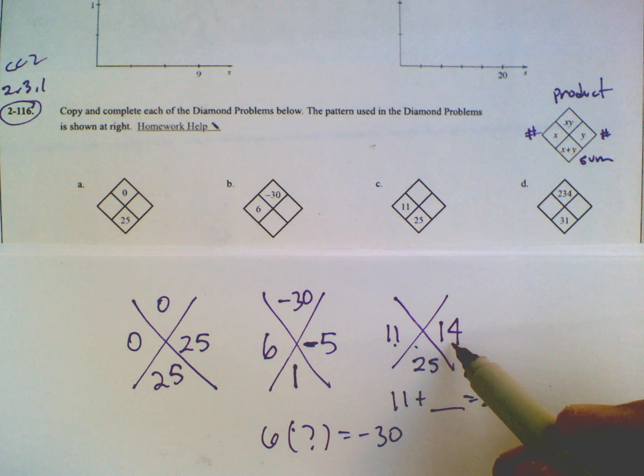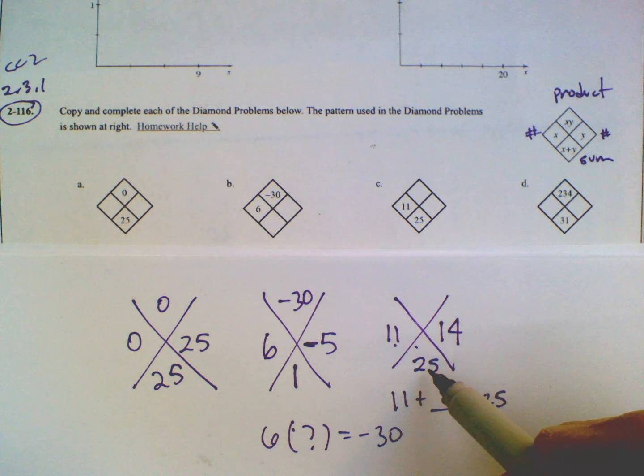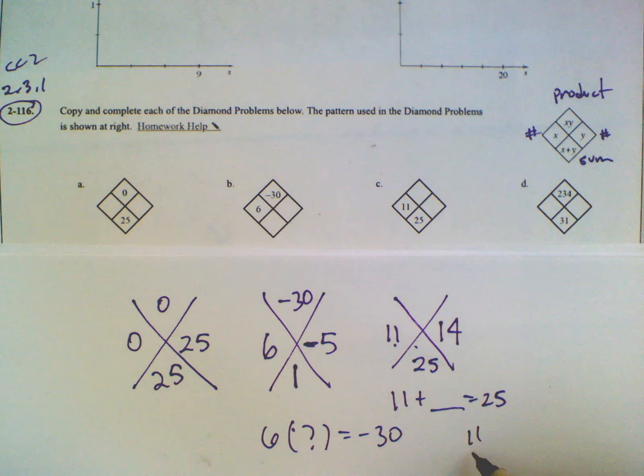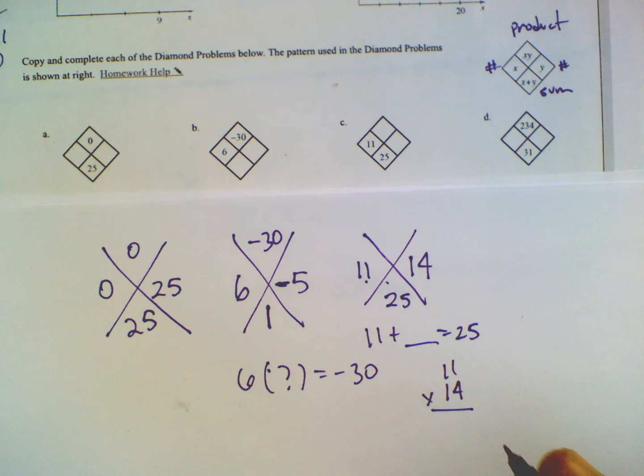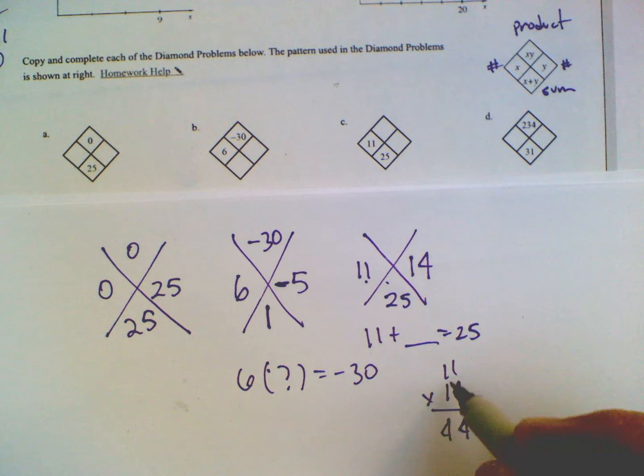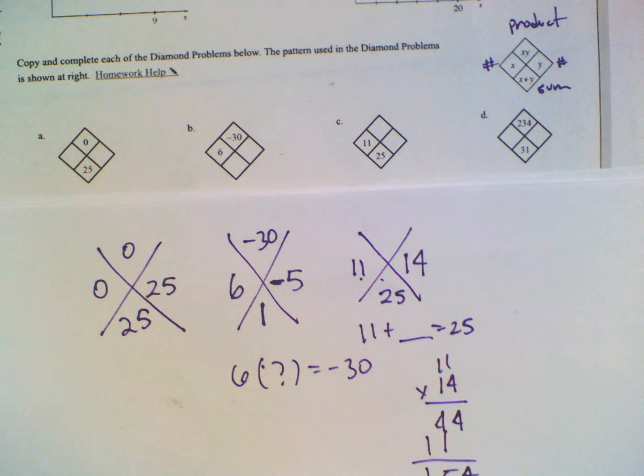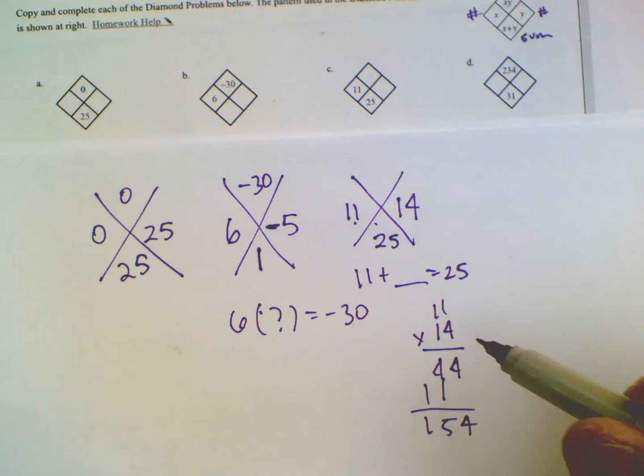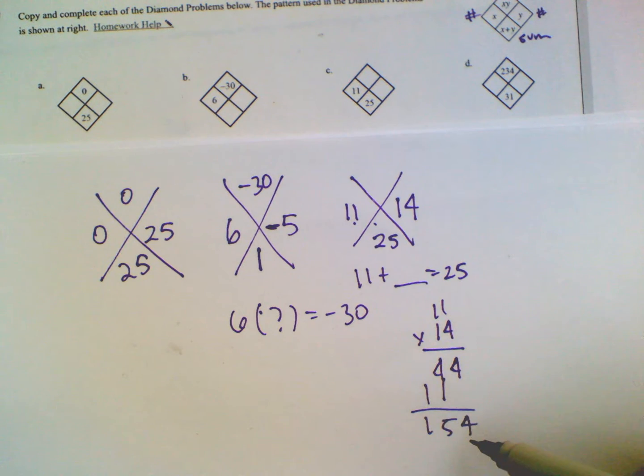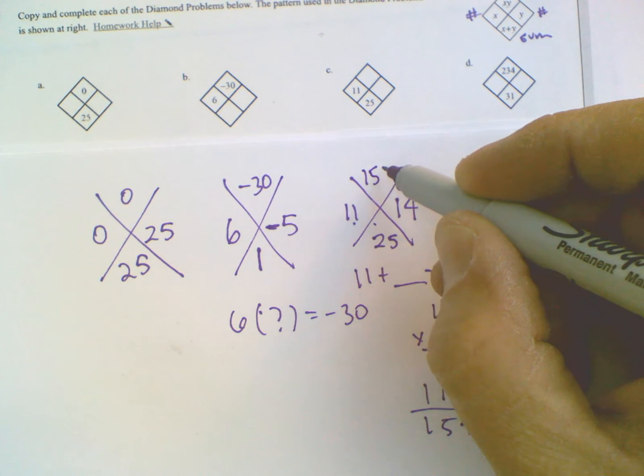11 plus 14 is 25. So if I multiply those two numbers, 11 times 14, do the product of 11 and 14, do that real quick. I get 154. If I do the product of 11 and 14, I'll get 154. So my product is 154.